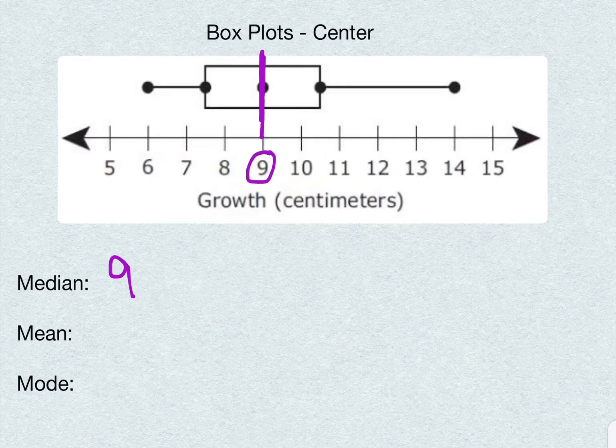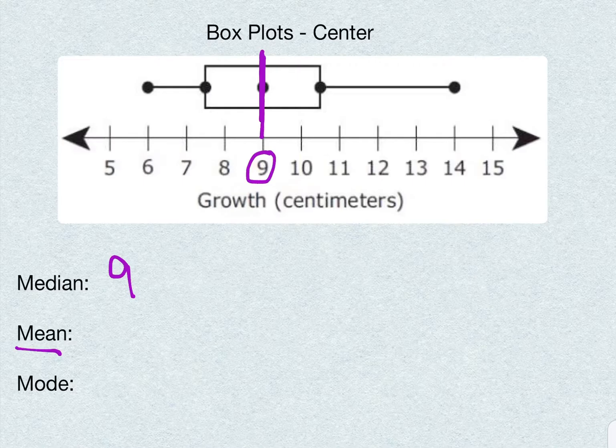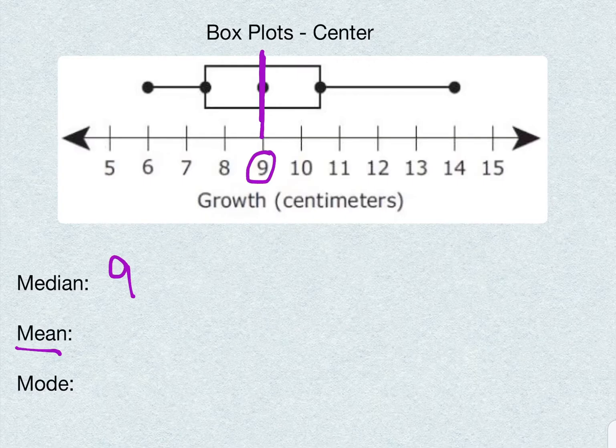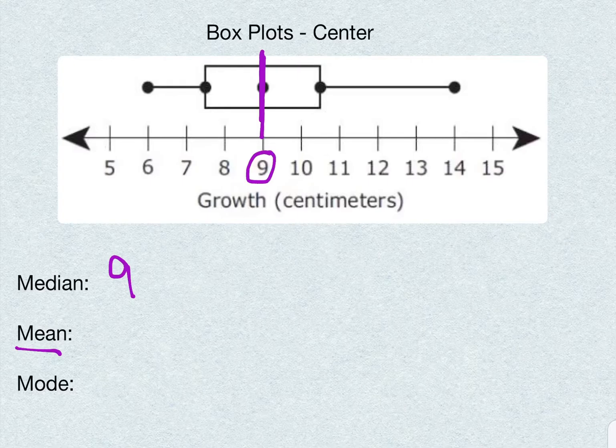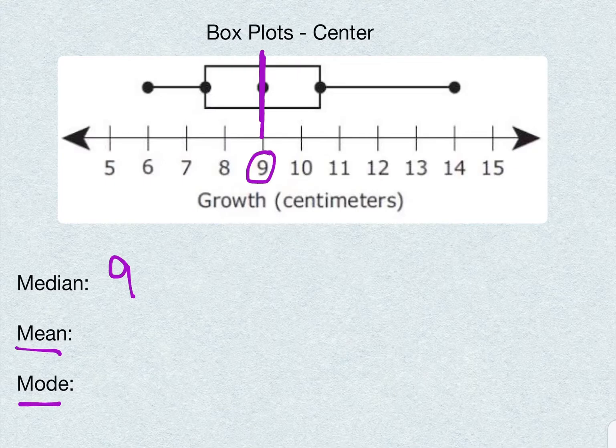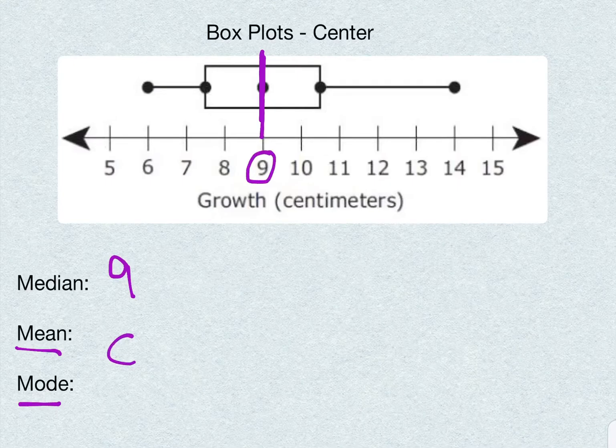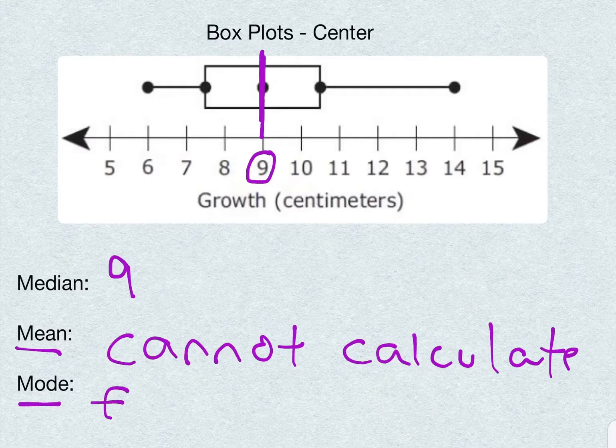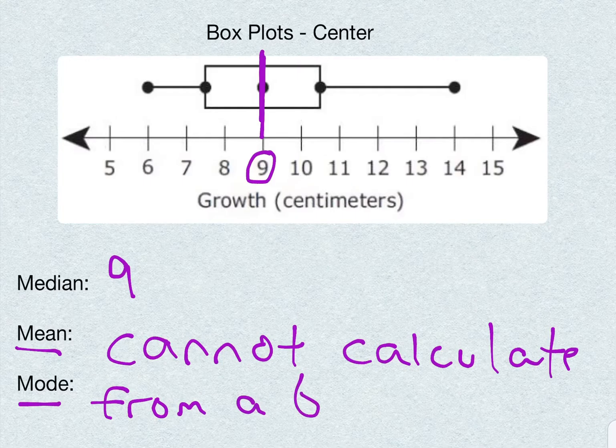Now with mean and mode, for mean, we would have to add up all of our numbers and divide by how many we had. But in this box plot, do we know how many points we have? And do we know what the points are? Since we don't know how many points we have or where they are exactly, we cannot calculate the mean. And the same thing goes with the mode. We can't calculate which one appears the most if we don't know exactly what the points are. So for these two, we cannot calculate from a box plot.